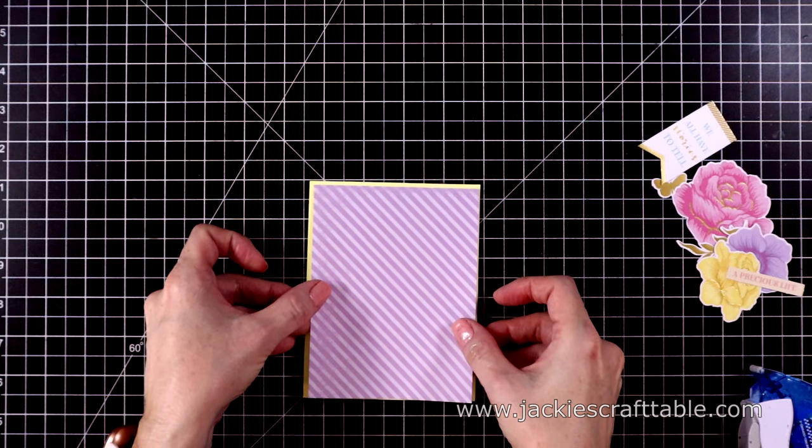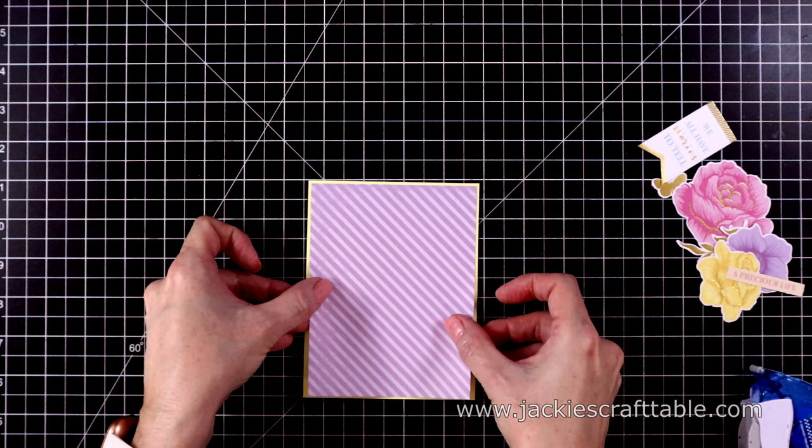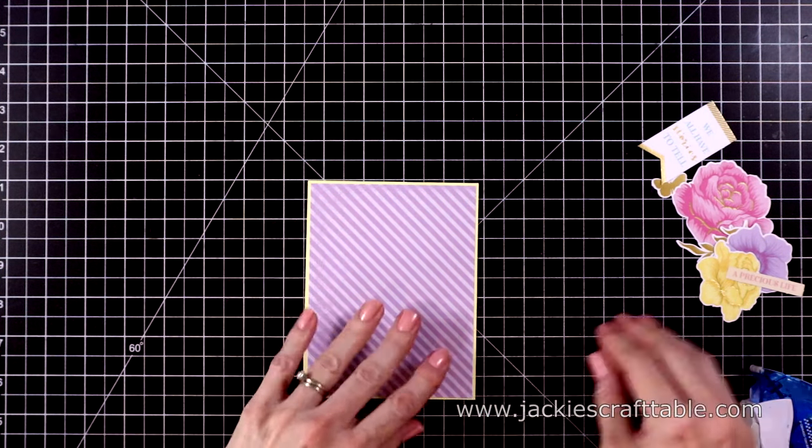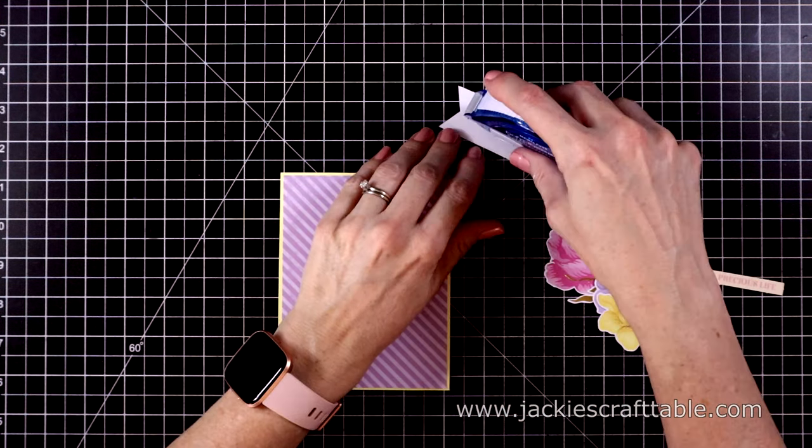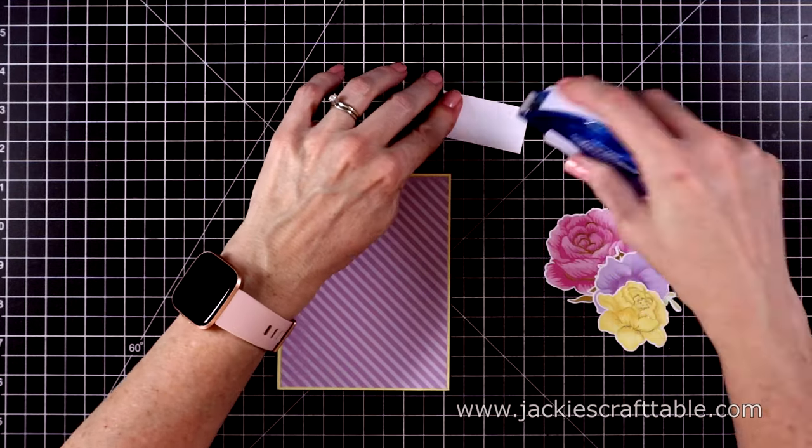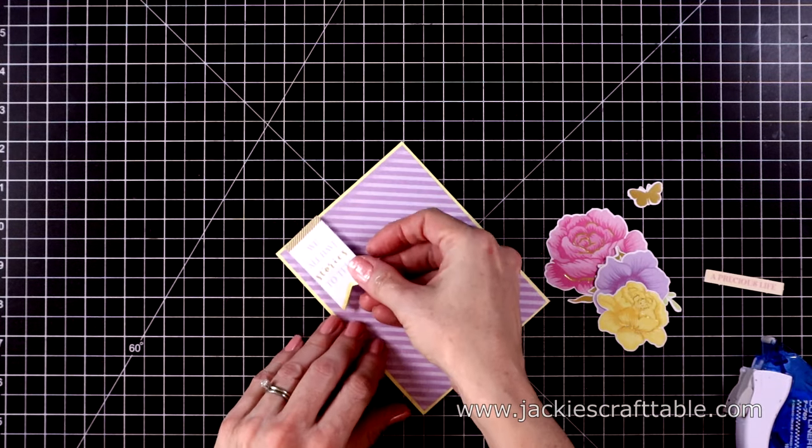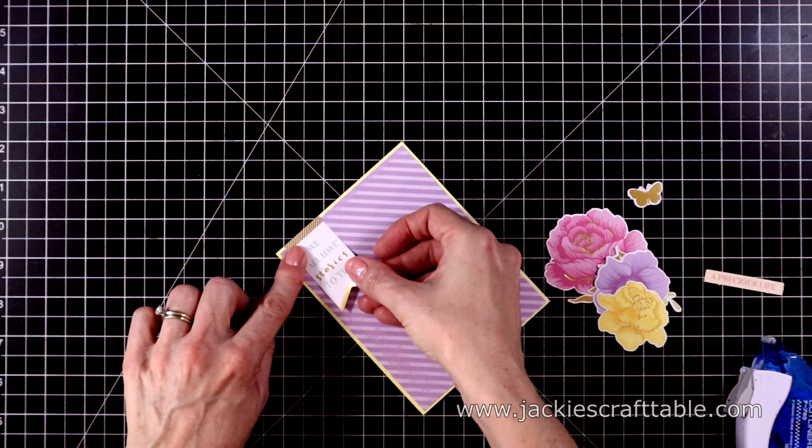And then I'm going to add this purple striped paper. I love the diagonal stripes on this. The sentiment, well, one of the two sentiments is going to say we all have stories to tell. And I'll adhere that down flat with some dot liner at the top.